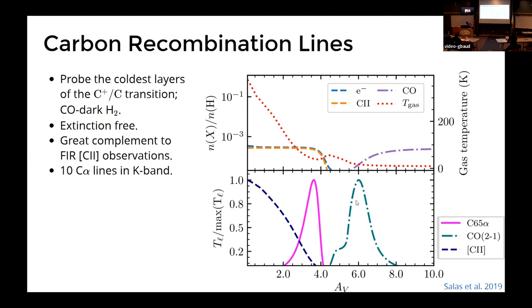And then the recombination line emission is coming mainly from the coldest layers. And of course, as you go deeper, you get CO emission.